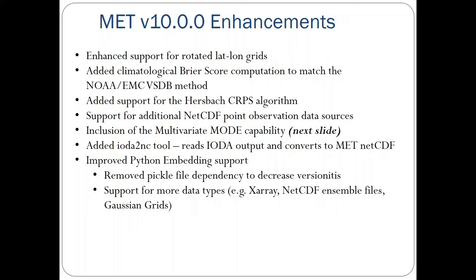Besides bug fixes and infrastructure-related developments, additional MET version 10.0.0 enhancements included support for rotated lat-long grids, adding the computation for the Brier score to match how EMC computed it for the VSDB method, adding support for the Hersbach CRPS algorithm, support for additional NetCDF point observation data sources, the inclusion of the multivariate MODE capability, improved Python embedding support where we removed the pickle file dependency to decrease versionitis, and also supported more data types including X-array, NetCDF, ensemble files, and Gaussian grids.